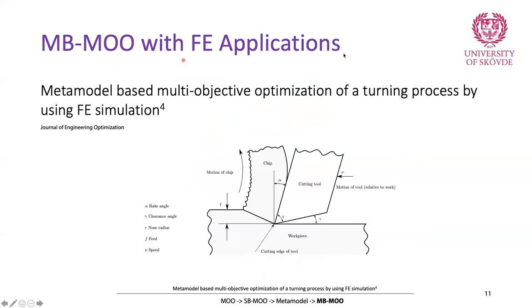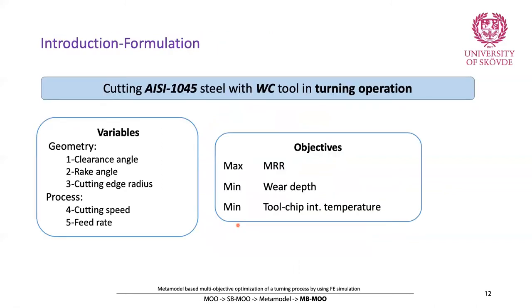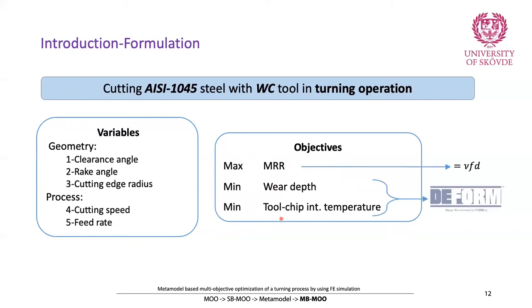Let's look at the same application done using simulation-based multi-objective optimization — the turning operation. This was related to Volvo Cars, because we wanted to optimize their operation process. We defined this case study to test our framework for automating the whole process. We had three objectives: the first could be obtained from a simple equation very fast, but the other two required running finite element simulations, which took a long time. We had five variables.